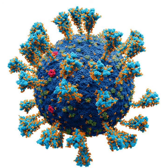HIV infections are usually treated with a combination of antiviral drugs, each targeting a different stage in the virus's life cycle. There are drugs that prevent the virus from attaching to cells, others that are nucleoside analogues, and some that poison the virus's enzymes that it needs to reproduce. The success of these drugs is proof of the importance of knowing how viruses reproduce.